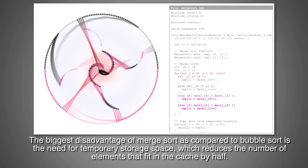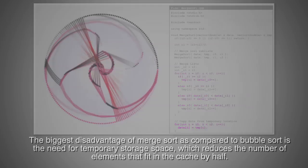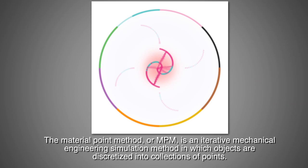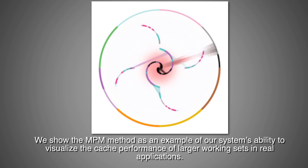The material point method, or MPM, is an iterative mechanical engineering simulation method in which objects are discretized into collections of points. We show the MPM method as an example of our system's ability to visualize the cache performance of larger working sets in real applications.